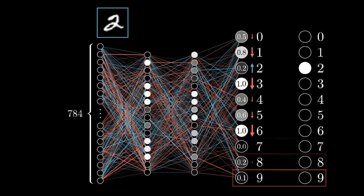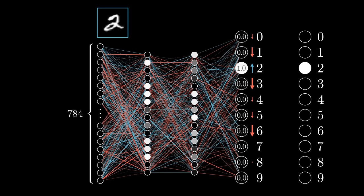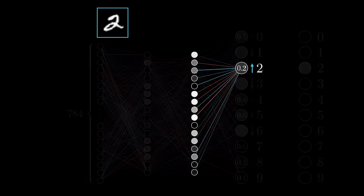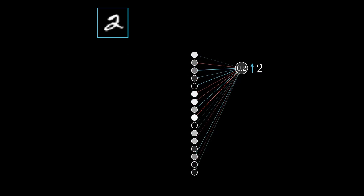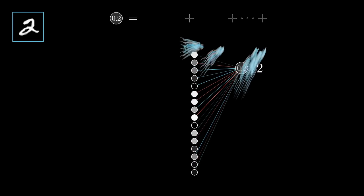Moreover, the sizes of these nudges should be proportional to how far away each current value is from its target value. For example, the increase to that number 2 neuron's activation is in a sense more important than the decrease to the number 8 neuron, which is already pretty close to where it should be. So zooming in further, let's focus just on this one neuron, the one whose activation we wish to increase.